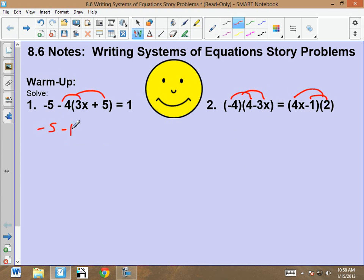So negative 5 minus 12x minus 20 equals 1. Negative 25 minus 12x equals 1. Negative 12x equals 26. x equals negative 13 over 6.